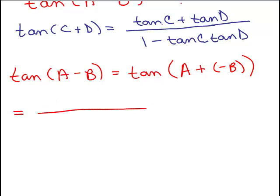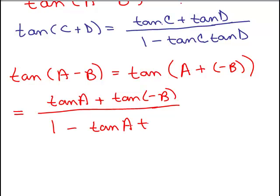So it's the tangent of the first angle plus the tangent of the second angle. So what's that going to be? The tangent of the first angle is tangent of A plus the tangent of the second angle, which is the tangent of negative B over 1 minus the tangent of the first angle times the tangent of the second angle.